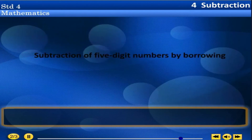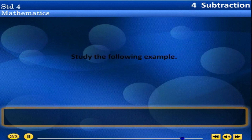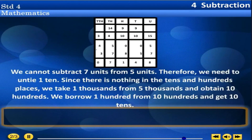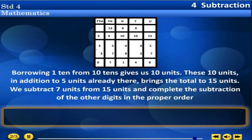Subtraction of 5-digit numbers by borrowing. Study the following example. We cannot subtract 7 units from 5 units. Therefore, we need to untie 1 ten. Since there is nothing in the tens and hundreds places, we take 1 thousand from 5 thousands and obtain 10 hundreds. We borrow 1 hundred from 10 hundreds and get 10 tens. Borrowing 1 ten from 10 tens gives us 10 units. These 10 units in addition to 5 units already there bring the total to 15 units. We subtract 7 units from 15 units and complete the subtraction of the other digits.